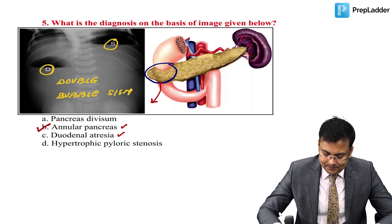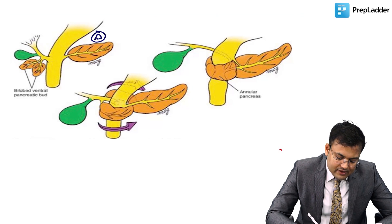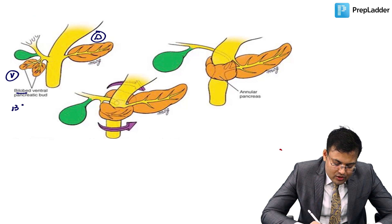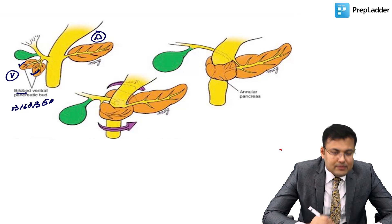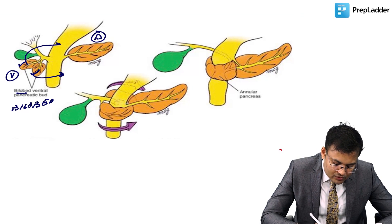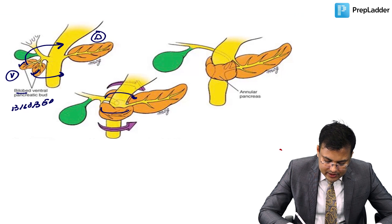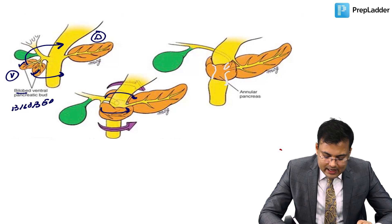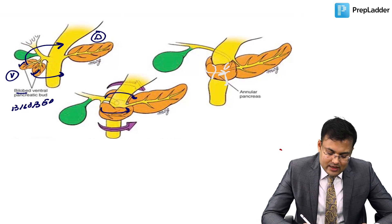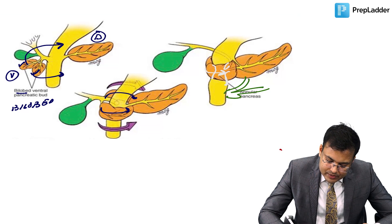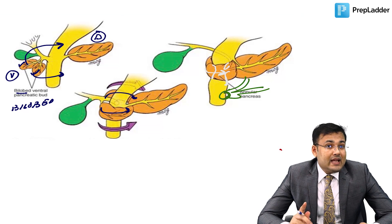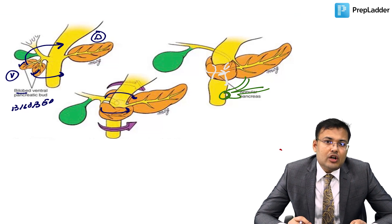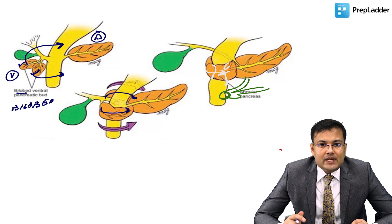In pancreatic development, there is a dorsal bud and a ventral bud. In some cases there is a bi-lobed ventral bud — one part goes from front, one from behind — forming a ring or annulus around the duodenum. The bile duct opens distal to this obstruction, so the obstruction is proximal to the ampulla, resulting in non-bilious vomiting.